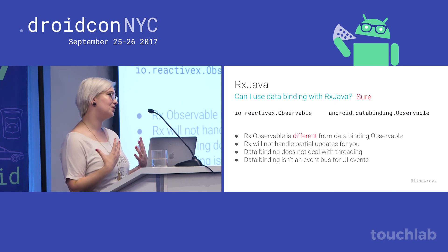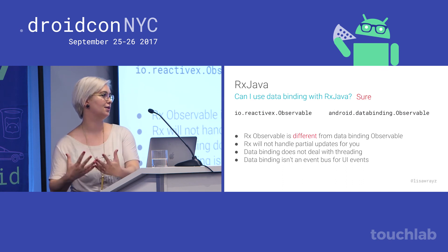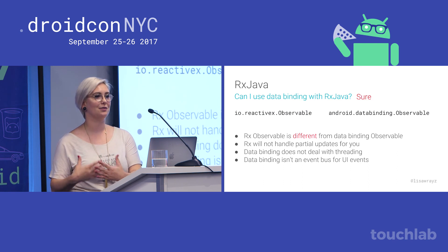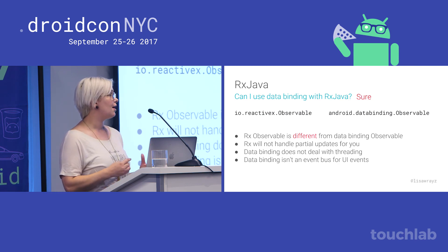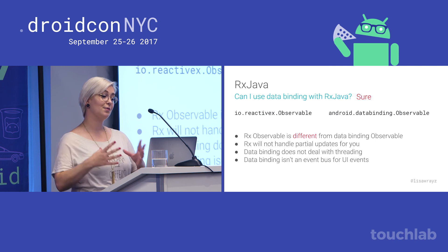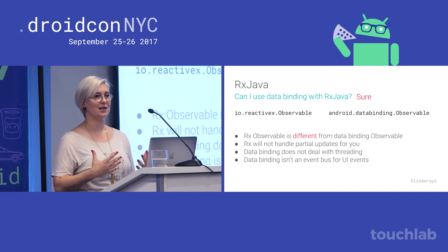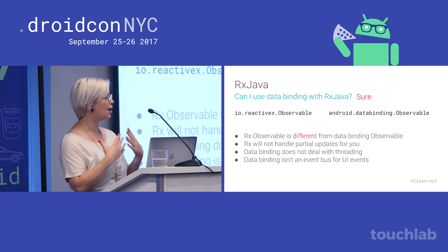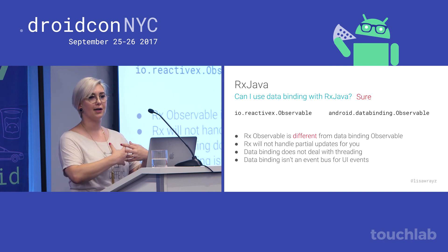Why would you still want data binding if you're using RxJava? RxJava does not handle view partial updates or interrelated properties, whereas data binding is specifically designed to do that. Data binding also does not deal with threading — it has nothing to do with asynchronous computations, which is what RxJava is great at. I've seen people hooking an onPropertyChangeListener from a binding to an RxJava observable — this can lead to unexpected results. I think it's best to consider that data binding is not an event bus for UI events. The two of them work together fine, and in practice they are fairly different.